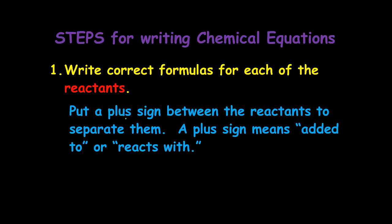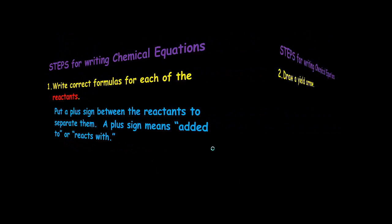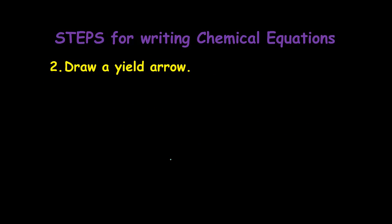First step: you write the correct formulas for each of the reactants, and you put a plus sign between the reactants to separate them. In a word problem, a plus sign will mean 'added to' or 'reacts with.' So an example would be hydrochloric acid reacts with silver — you would have HCl plus Ag.